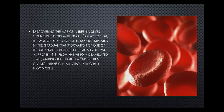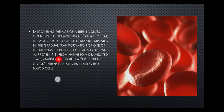Discovering the age of a tree involves counting its growth rings, and similarly the age of a red blood cell may be estimated by the gradual transformation of a membrane protein historically known as protein 4.1 — from a native to a deaminated state — making this protein a molecular clock intrinsic in all circulating red blood cells. By understanding the level of maturity of protein 4.1, we can understand how aged a red cell has become.